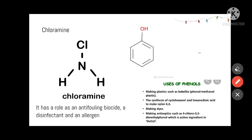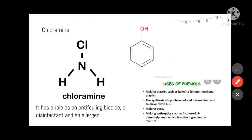Next is phenol — a very simple structure. Phenol is used in making plastics such as Bakelite. It is a good disinfectant and is an important ingredient in Dettol. Phenol is also used in the preparation of dyes.